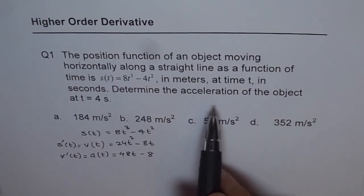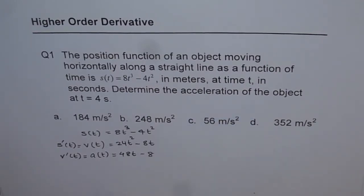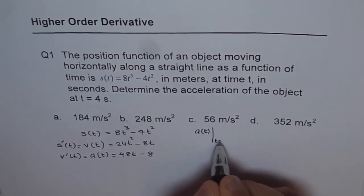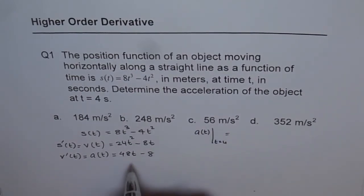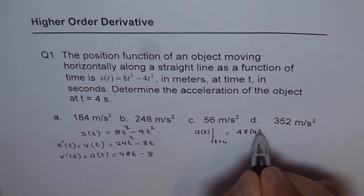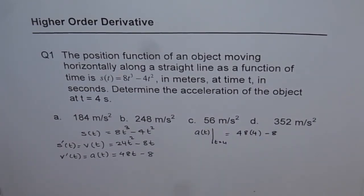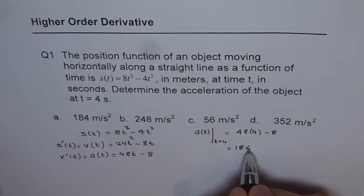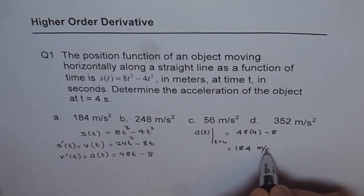Now we need to find acceleration of the object at t equals 4. So acceleration at t equals 4 will be substitute 4 here. So you get 48 times 4 minus 8. Use your calculator and then get the answer. 48 times 4 minus 8 equals 184. So what you get is 184 and the units are meters per second squared.